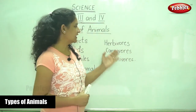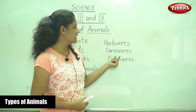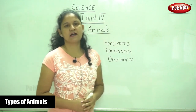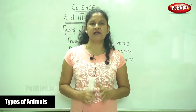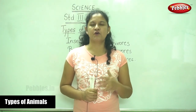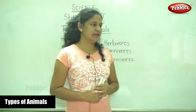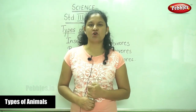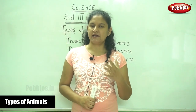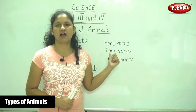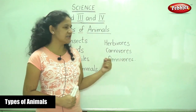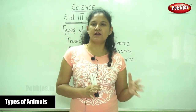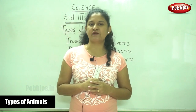Animals are classified into herbivores, carnivores, and omnivores. Herbivores are animals that depend entirely on plants for their food. Carnivores are animals that eat the flesh of other animals and are termed carnivores.